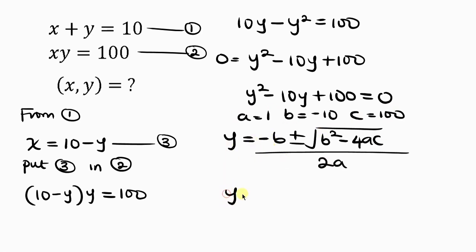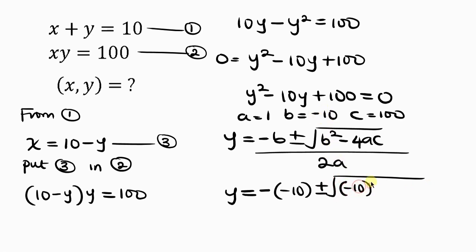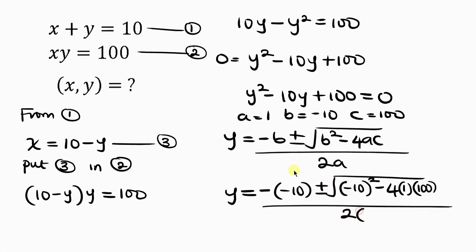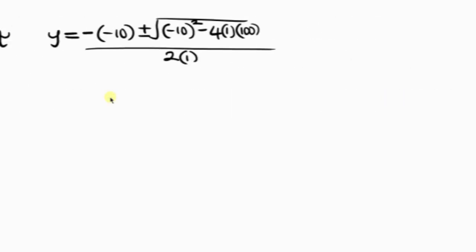Now let's substitute into the quadratic formula. We have y equal to negative b — b is negative 10 — so negative of negative 10, plus or minus the square root of b squared: negative 10 squared, minus 4 times a — a is 1 — times c — c is 100. All over 2 times a, where a is 1.